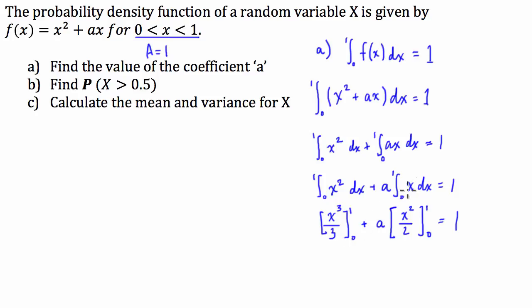Okay, so let's evaluate these integrals. So the integral at 0 is going to be 0, so it's just going to be what it is at 1. So 1 cubed is 1 over 3, so this is going to be 1 third plus a times a half, so a over 2 equals 1.